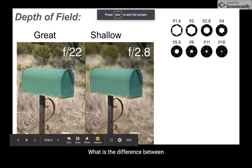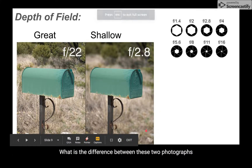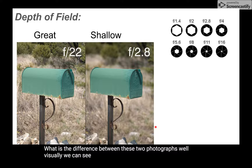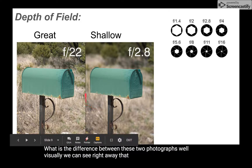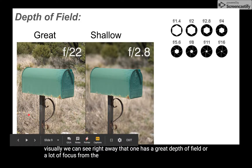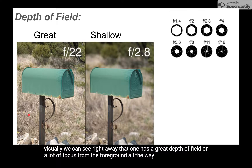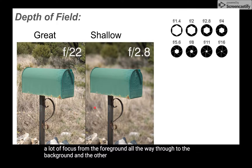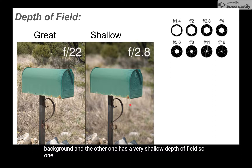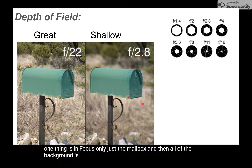What is the difference between these two photographs? Visually we can see right away that one has a great depth of field — a lot of focus from the foreground all the way through to the background — and the other one has a very shallow depth of field. In one, only the mailbox is in focus and all of the background is blurred, so we know it has a shallow depth of field.